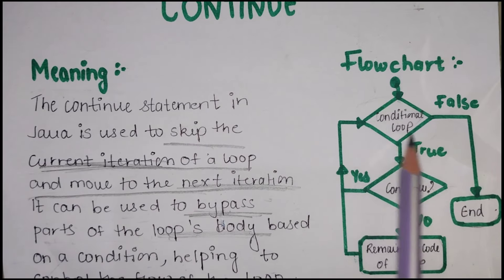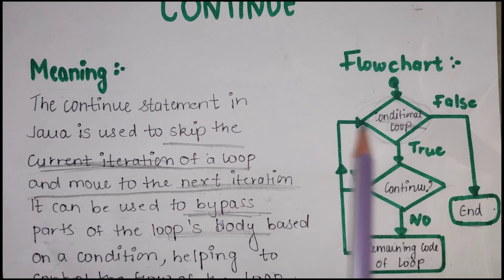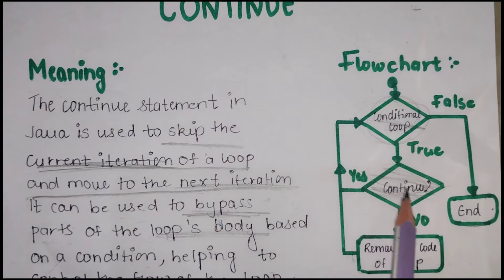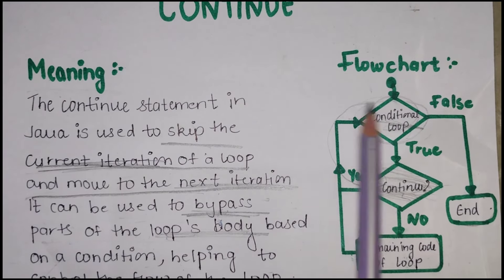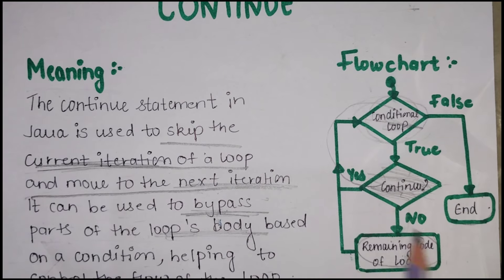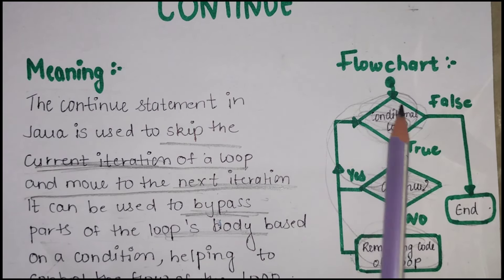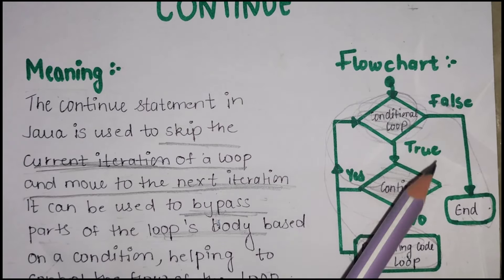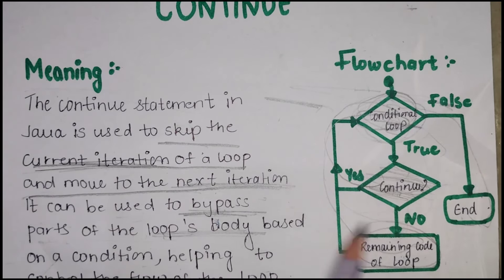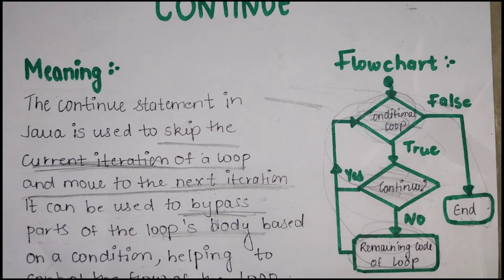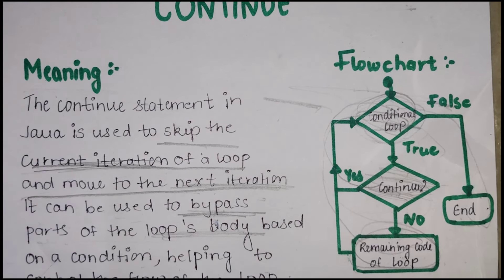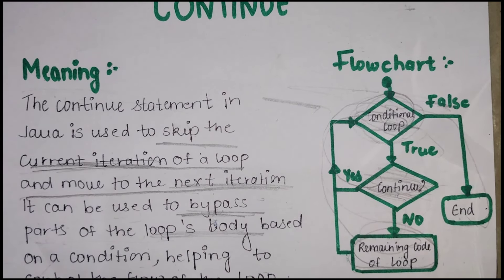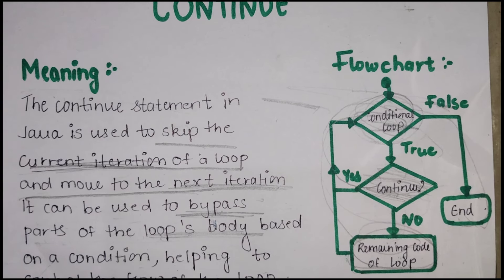Now we will see the flowchart. In the conditional loop, we can use any loop — for, while, or do-while. Then there is a decision: whether to continue or not. If we continue, the loop executes again. If not, the rest of the code executes and it goes back to the conditional loop. Unlike break, which we saw in the last video where we came out of the loop entirely, with continue we only skip that specific iteration.